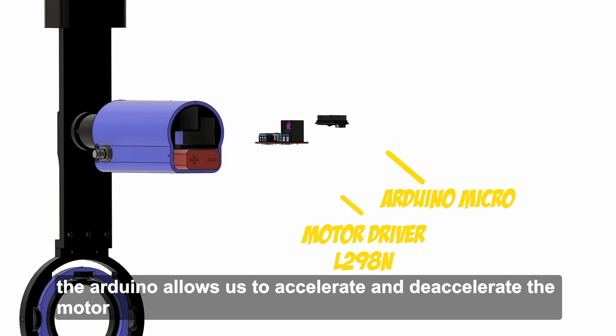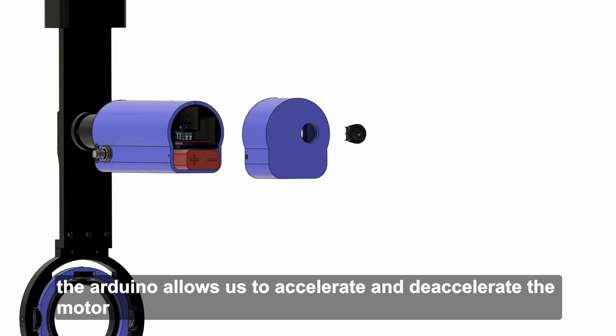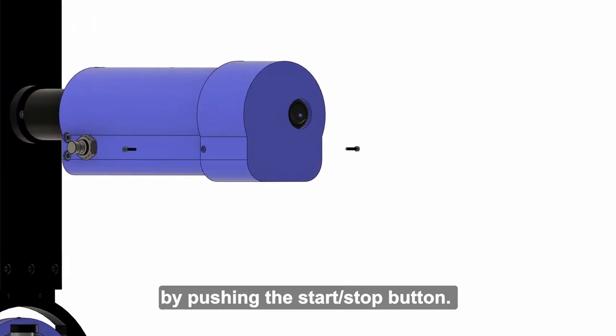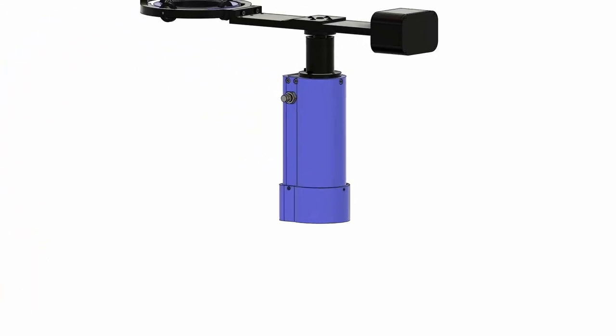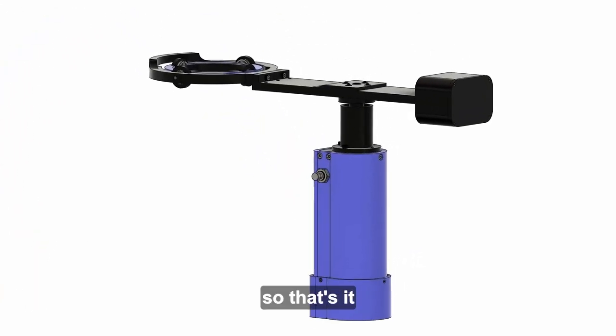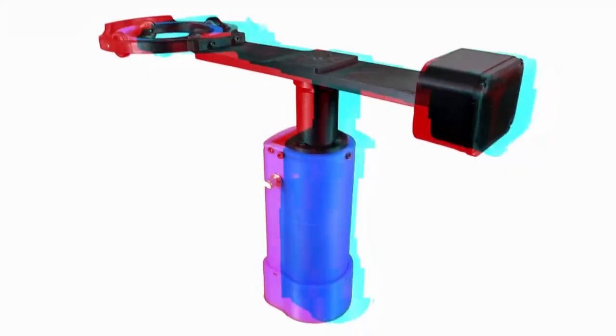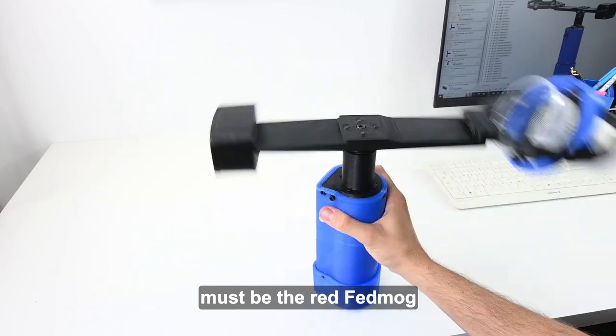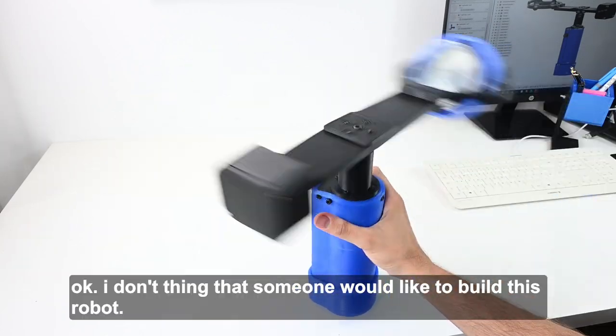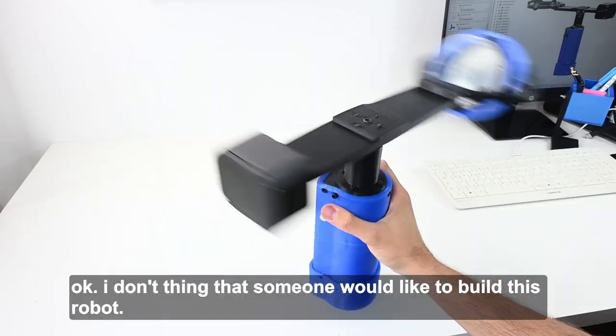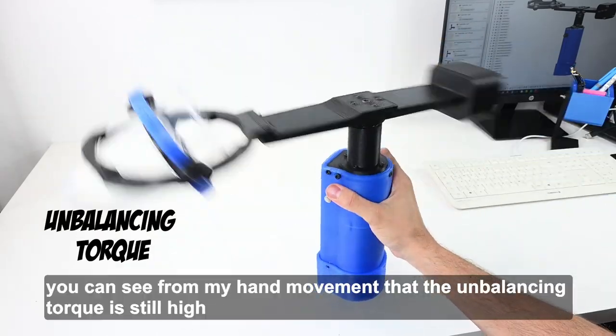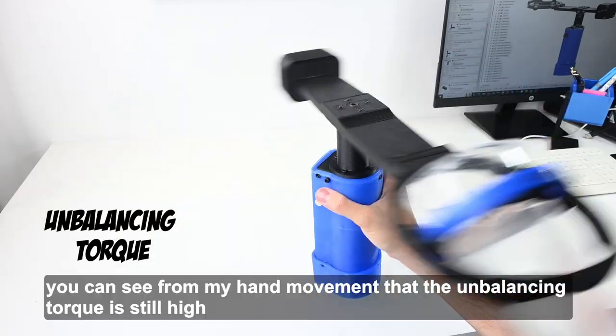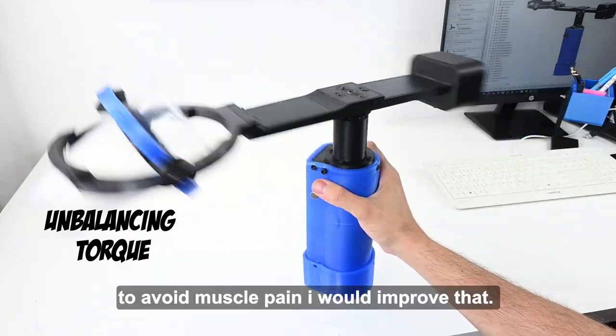So that's it. Improvements? Who wrote this down? Must be the red fat mug. Okay, I don't think that someone would like to build this robot but just in case you can see from my hand movement that the unbalancing torque is still high. To avoid muscle pain I would improve that.